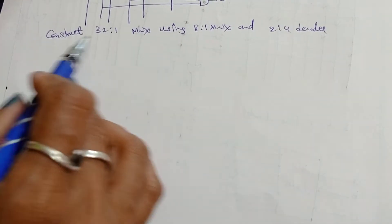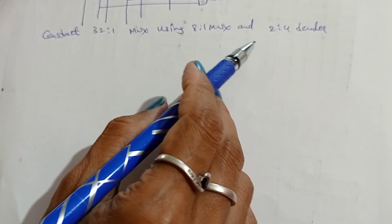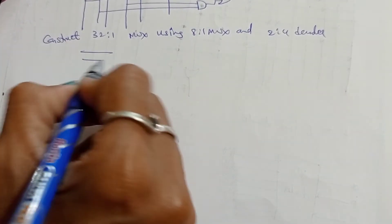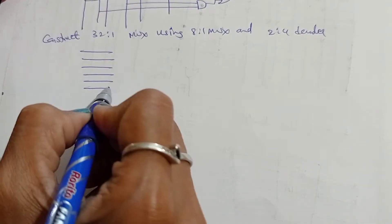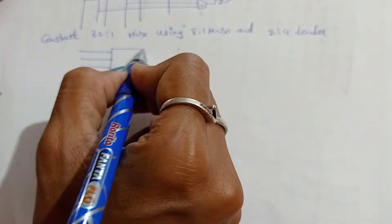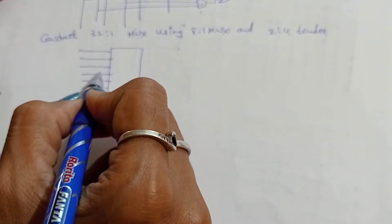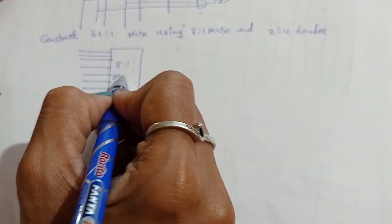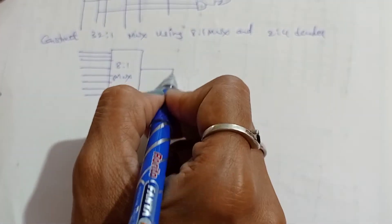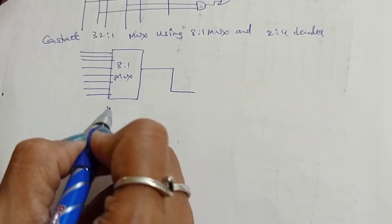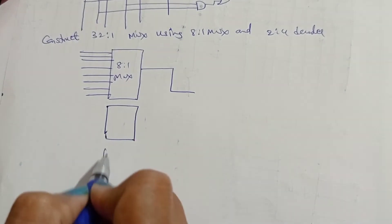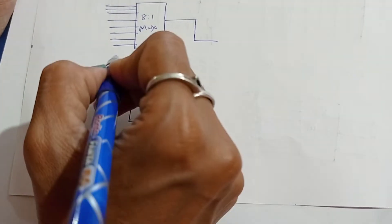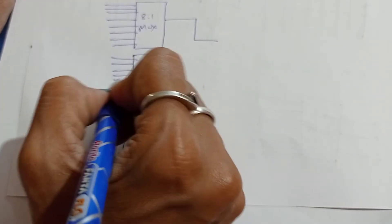Construct a 32 is to 1 MUX using 8 is to 1 MUX and a 2 is to 4 decoder. We will take four 8 is to 1 MUX units, each with inputs 1 through 8.